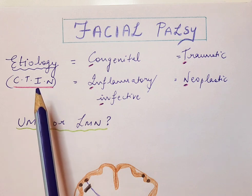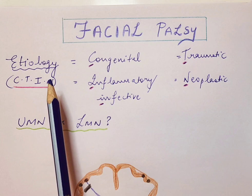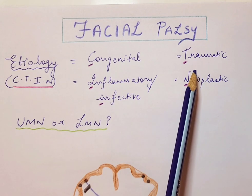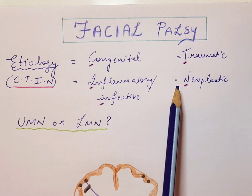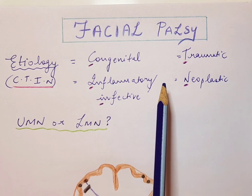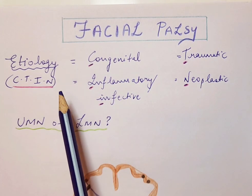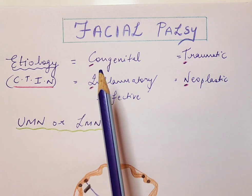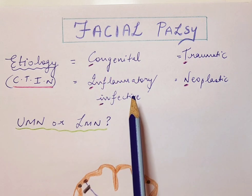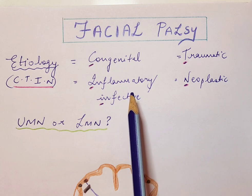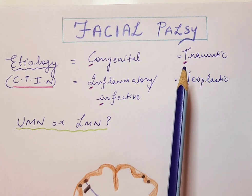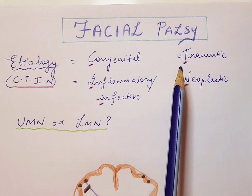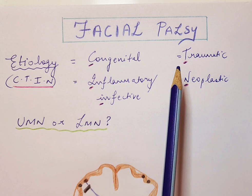There is an easy mnemonic for the etiopathogenesis of any condition: CTIN. The causes of facial palsy can be congenital, traumatic, inflammatory or infective, or neoplastic. Whether this is an upper or lower motor neuron lesion, we will see how to differentiate, but these are the broad categories. In plastic surgery we encounter congenital facial palsy, inflammatory cases, and surgical cases due to trauma — whether iatrogenic or inflicted. There are also many ENT and neurosurgical causes.